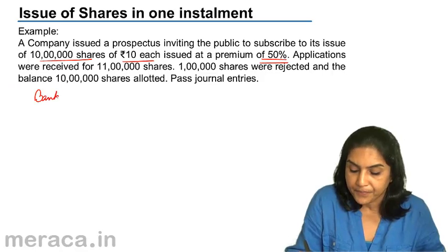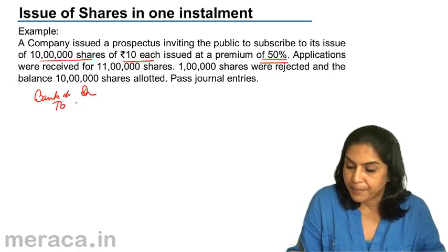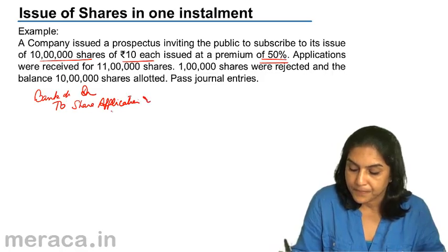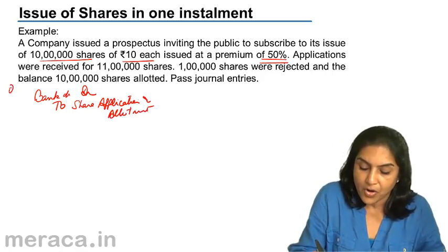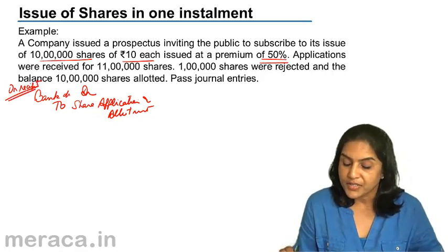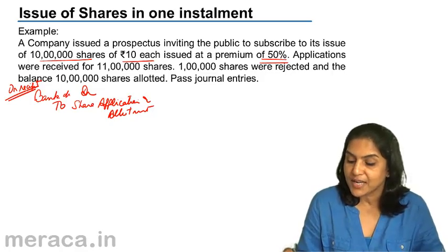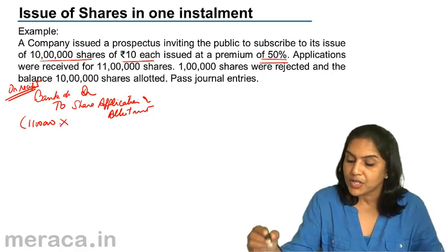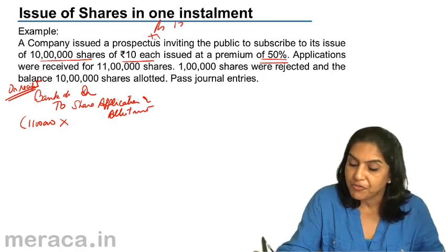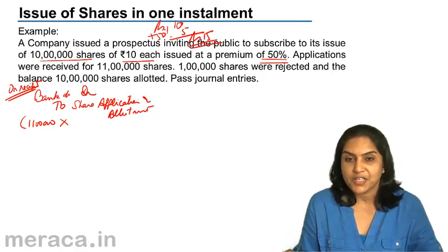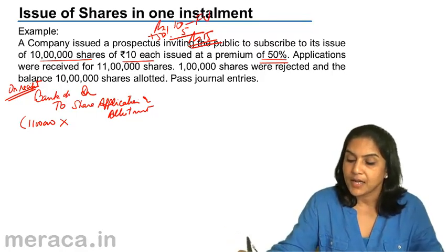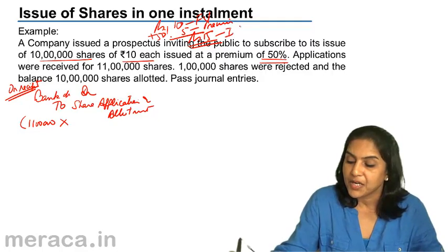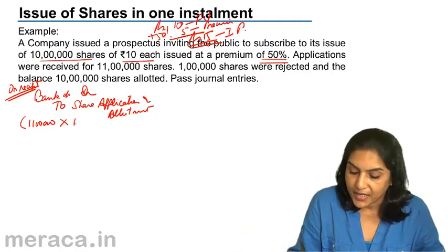First, on receipt of money: Bank Account debit to Share Application and Allotment. What is the amount? The amount received is for 11 lakh shares. The issue price is ₹10 plus 50 percent premium, which is ₹5, so the issue price is ₹15. Therefore the amount is 11 lakh × ₹15.